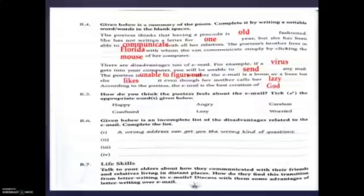Now let's do the next question B5: how do you think the poetess feels about the email? Tick the appropriate word given below. She feels happy — yes. Confused — yes, sometimes she is confused whether it is an advantage or a disadvantage, a boon or a bane. Angry — no. Lazy — yes. Careless — no. Worried — no.